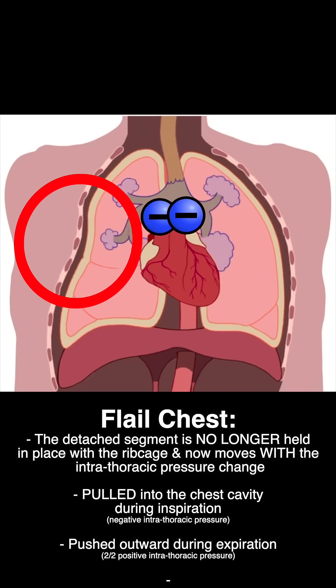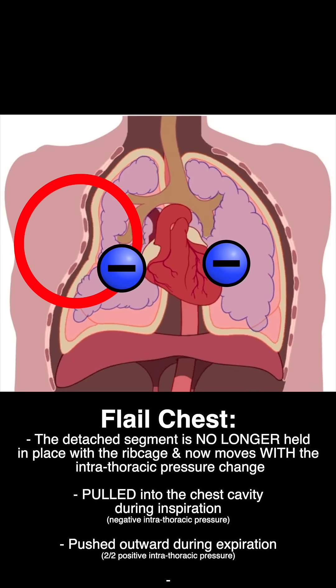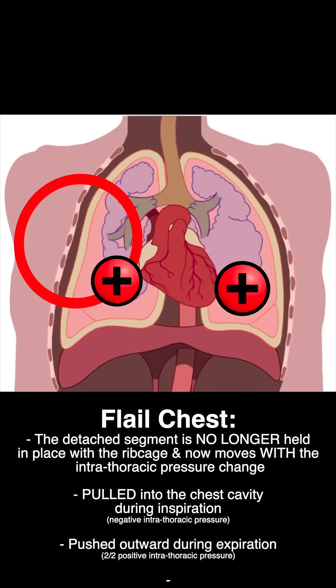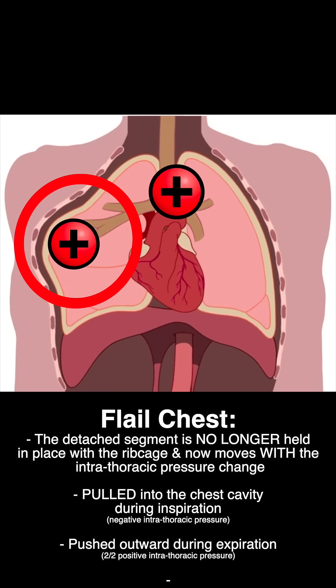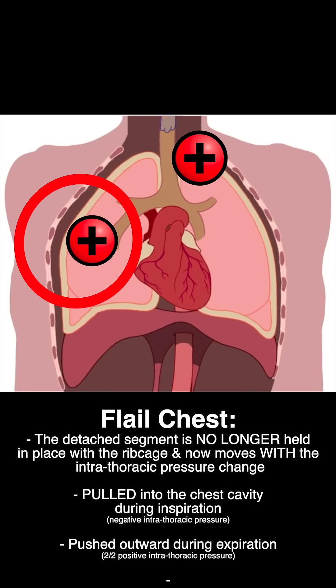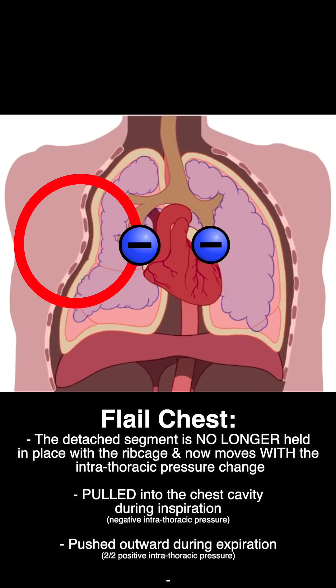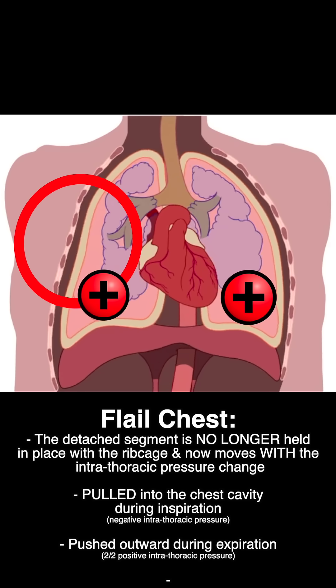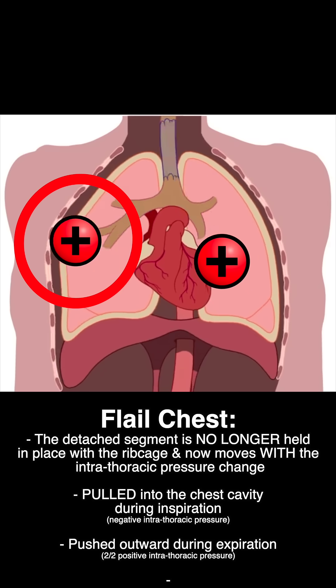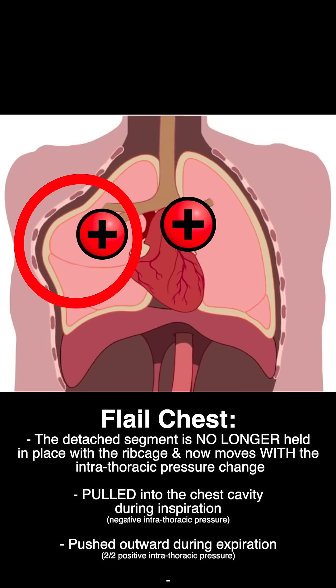When we have these rib fractures, the flail segment moves with the intrathoracic pressure and is no longer held in place with the entire rib cage, moving inward during inspiration and outward during expiration.